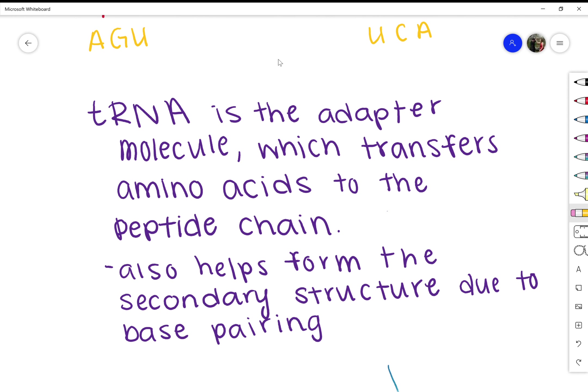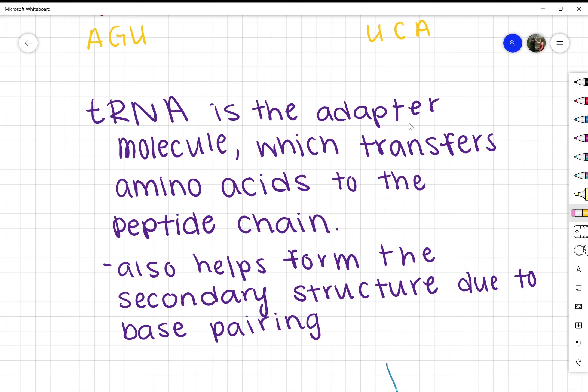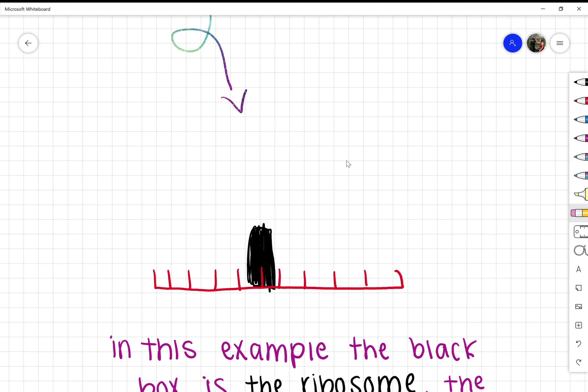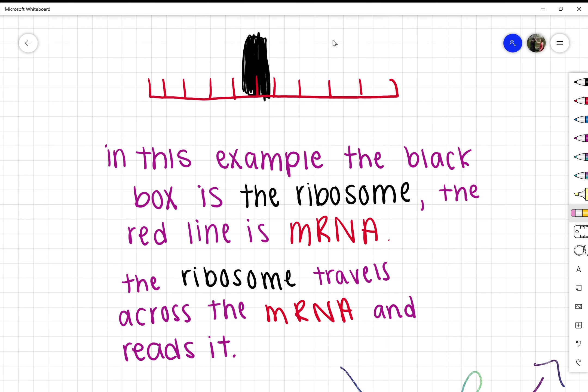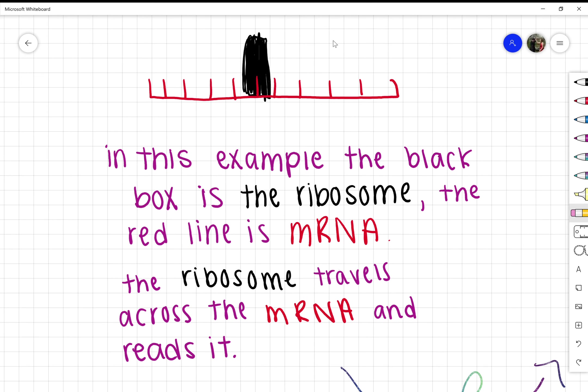This also helps form the secondary structure due to base pairing. In this example, the black box is the ribosome and the red line is the mRNA. The ribosome travels across the mRNA and reads it.